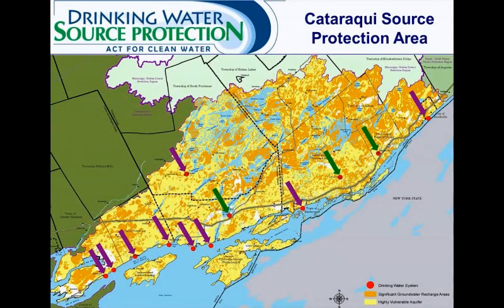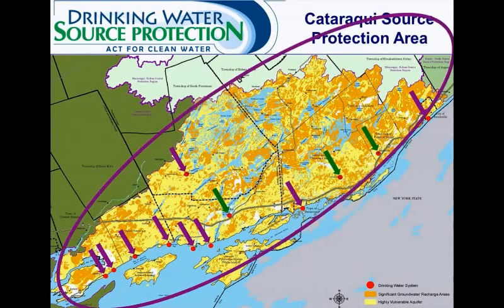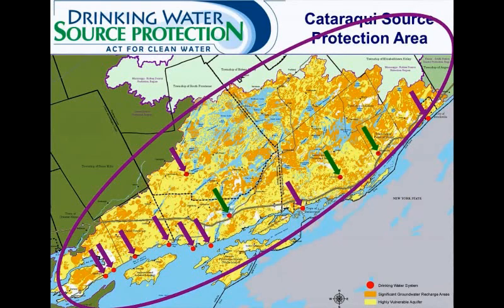Protection zones are mapped around these drinking water sources. For surface water they are called intake protection zones, and for groundwater they are called wellhead protection areas. The balance of the population relies on drinking water from private intakes or wells. The majority of the Cataraqui Source Protection Area is yellow or orange, representing regionally sensitive groundwater areas known as highly vulnerable aquifers and significant groundwater recharge areas, which account for more than 90% of the entire area. The entire area is characterized by thin soils and fractured bedrock, so that water and pollutants on the ground surface can easily soak in and potentially affect drinking water sources. The sensitive groundwater areas are important for rural populations on private wells, and the Cataraqui Source Protection Plan includes consideration of protection measures for these areas.